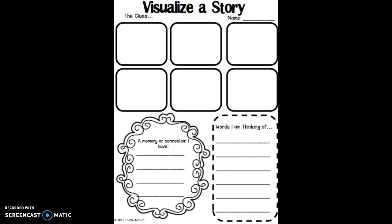Hi first graders, today we're going to get a chance to practice visualizing a story. Visualizing means that you're making a picture in your mind. You have to listen closely and carefully while you're listening to the story or while you're reading the story to try to hear clues that the author gives you about the setting, about the characters, and about what's happening. And then you can use those clues to try to create pictures in your mind or visualize the story.